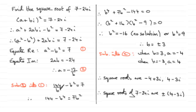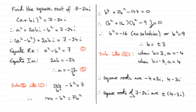Multiplying both sides by b squared to clear the fraction gives 144 minus b to the power 4 equals 7 b squared. Rearranging to make it equal zero by adding b to the power 4 and subtracting 144, we get a quartic equation which can be treated as a quadratic in b squared, and it factorizes.